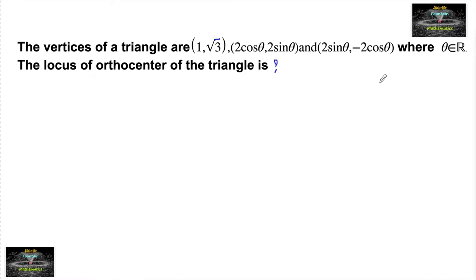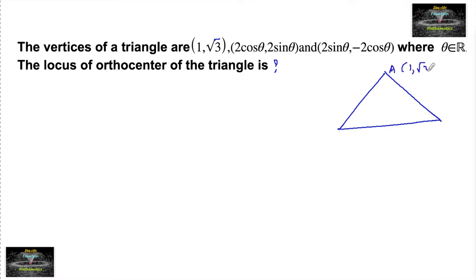Let us consider triangle ABC, where vertex A is (1, root 3), vertex B is (2 cos theta, 2 sin theta), and vertex C is (2 sin theta, minus 2 cos theta).